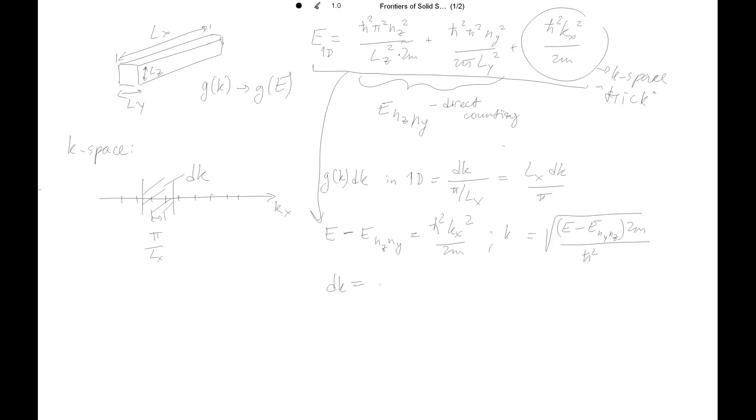Again using the chain rule we will have 1 over square root of (E - Eny,nz)·2m/ℏ² times taking the derivative of what's inside. So we have one-half from taking the derivative, times 2m/ℏ² dE. So the twos cancel.